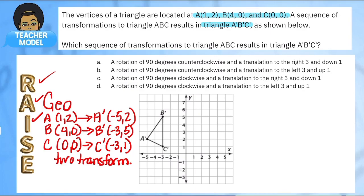So let's map out my original points. So here's (1, 2), this is A. And (4, 0) is B. And (0, 0) is C. So here's my original triangle.